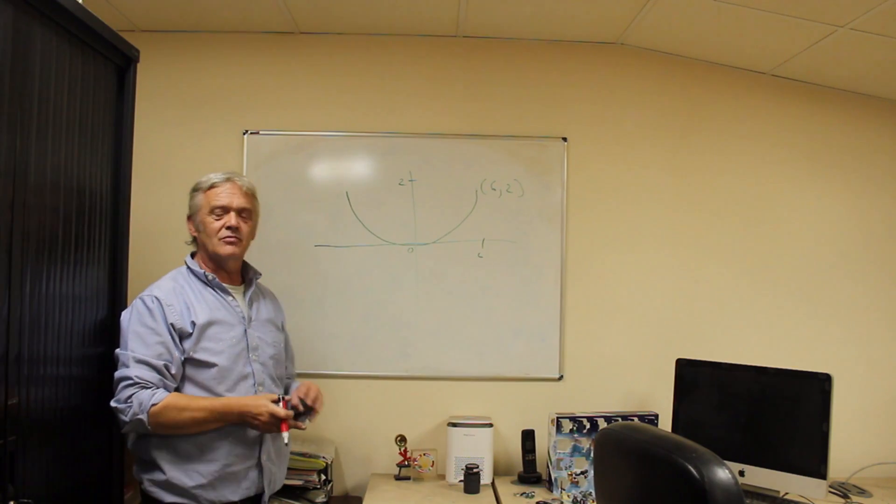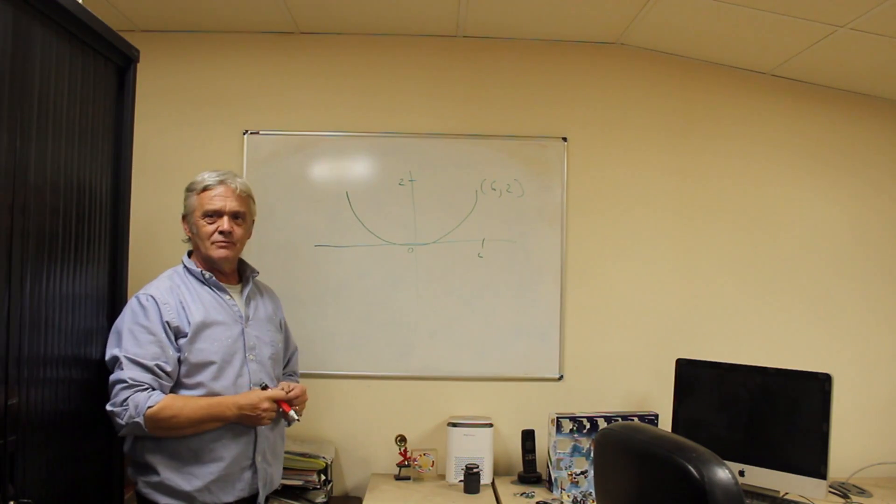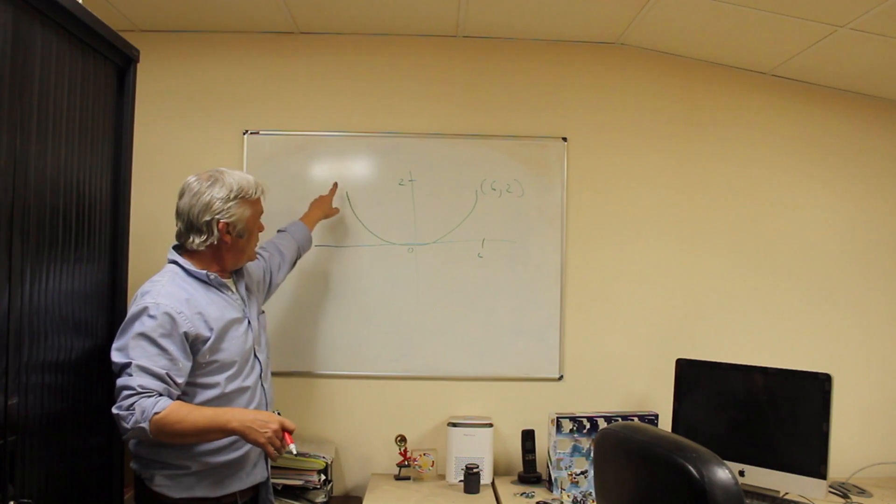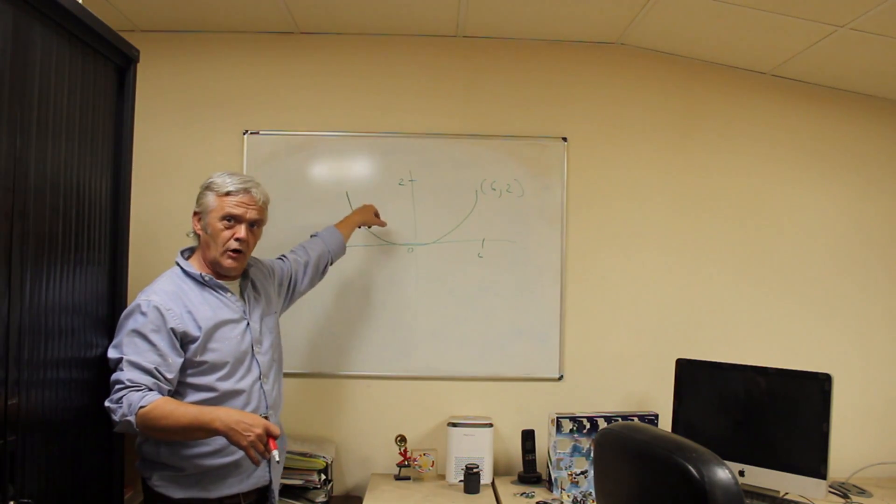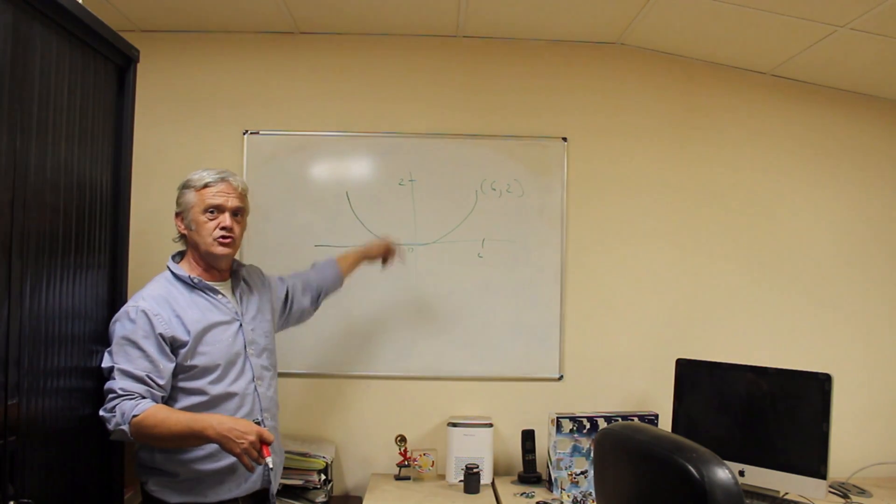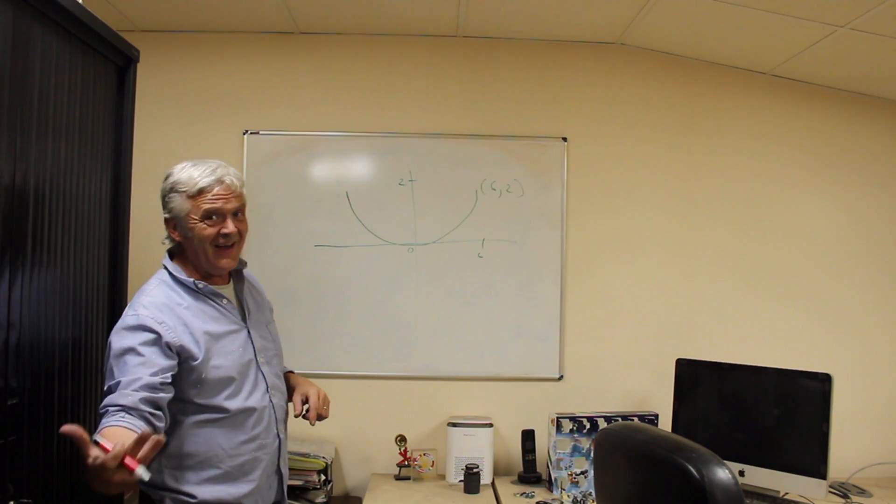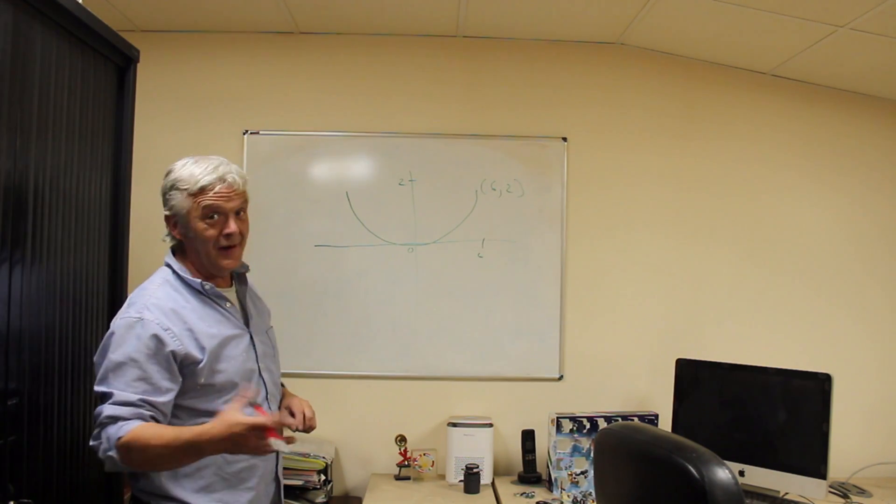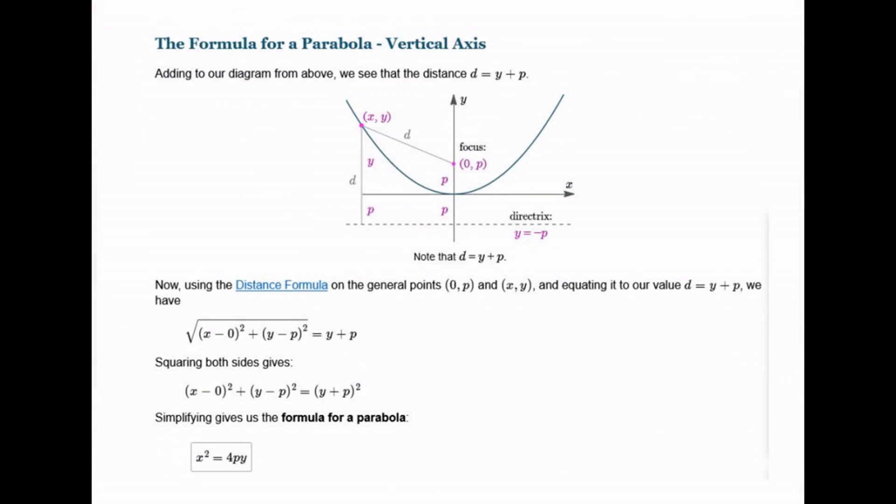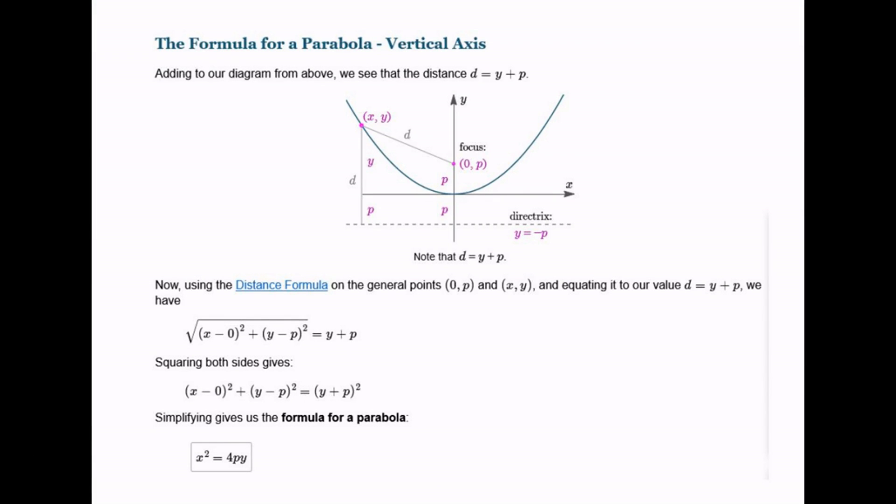Now you don't really need to remember this. I'm just showing you so that you can use this as a guide. But if you imagine that's the parabola that we've got drawn on the Cartesian set we can choose the point.